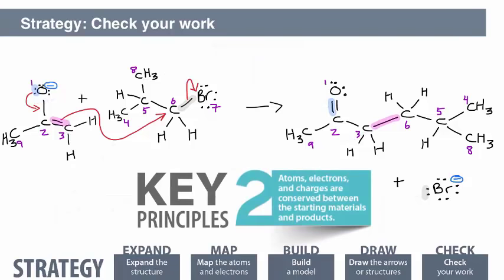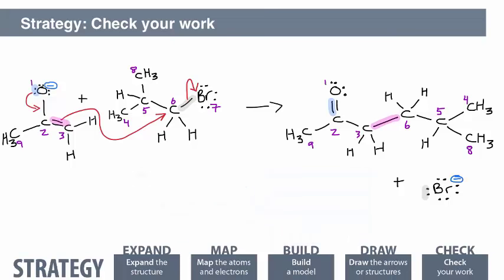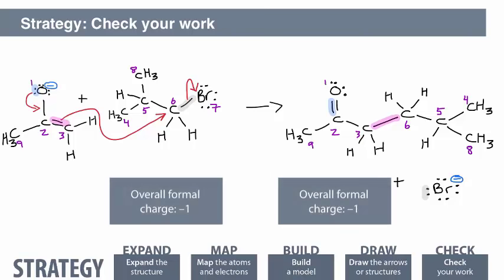Mapping tells us that all atoms and electrons have been conserved. Next, make sure that all formal charges have been included correctly. There should be the same overall charge in the reactants as in the products. There is an overall minus 1 charge in the starting materials, so there will be an overall minus 1 charge in the products.